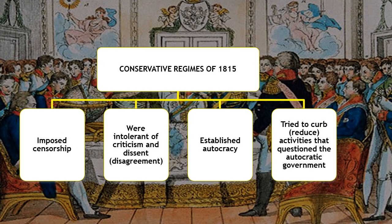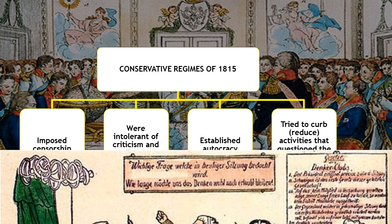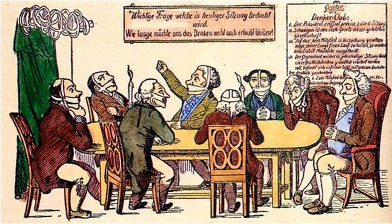The empires which defeated Napoleon — Britain, Prussia, Russia, and Austria — became very conservative after 1815. They imposed censorship and became totally intolerant of criticism and dissent, meaning anybody who spoke or published anything against them would be punished. They established autocratic governments with unlimited power and tried to reduce any activity that would question their authority.